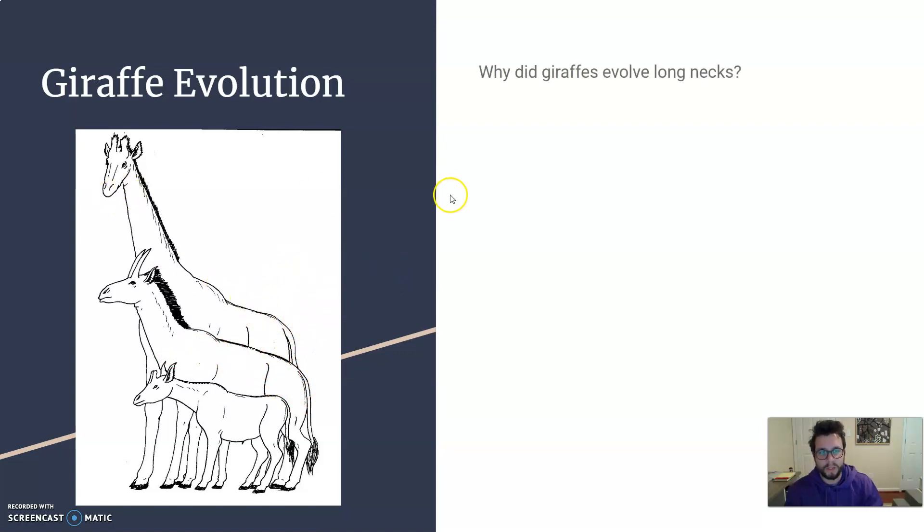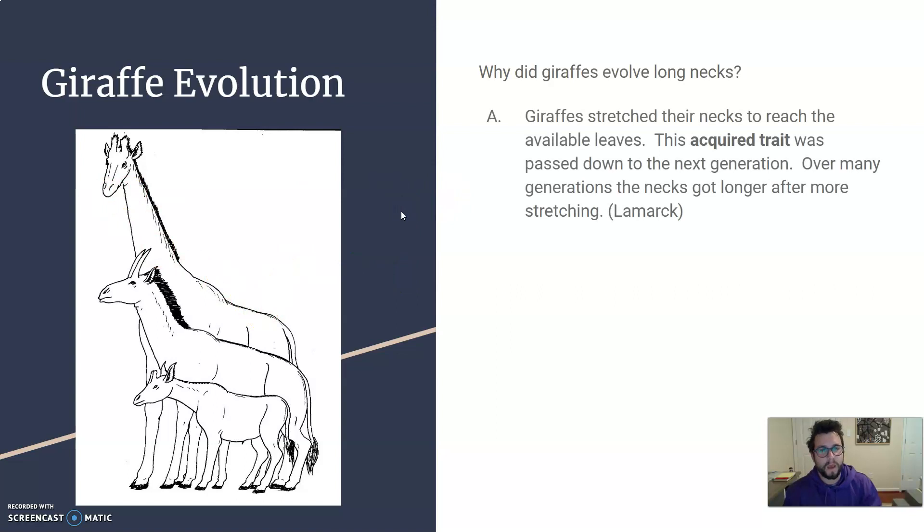So why did they evolve these long necks in the first place? Well, there's two options. The first proposition was from this guy Lamarck. His ideas about evolution said that animals change because of acquired traits. These giraffes stretched their necks to reach the available leaves. This acquired trait was passed down to the next generation. So by stretching their neck it got longer and they passed the longer neck down. Over many generations these necks got longer and longer.